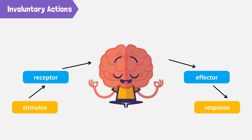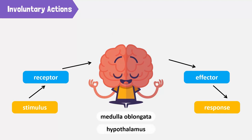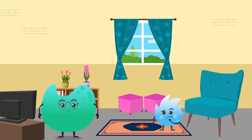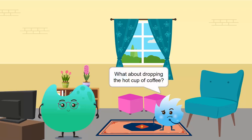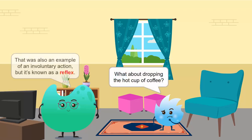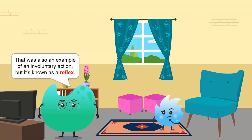For example, the beating of our heart and the blinking of our eyes. We can't control these actions with our intentions. They are controlled by specific parts of the central nervous system, which includes the medulla oblongata, hypothalamus, and spinal cord. What about dropping the hot cup of coffee? That was also an example of an involuntary action.